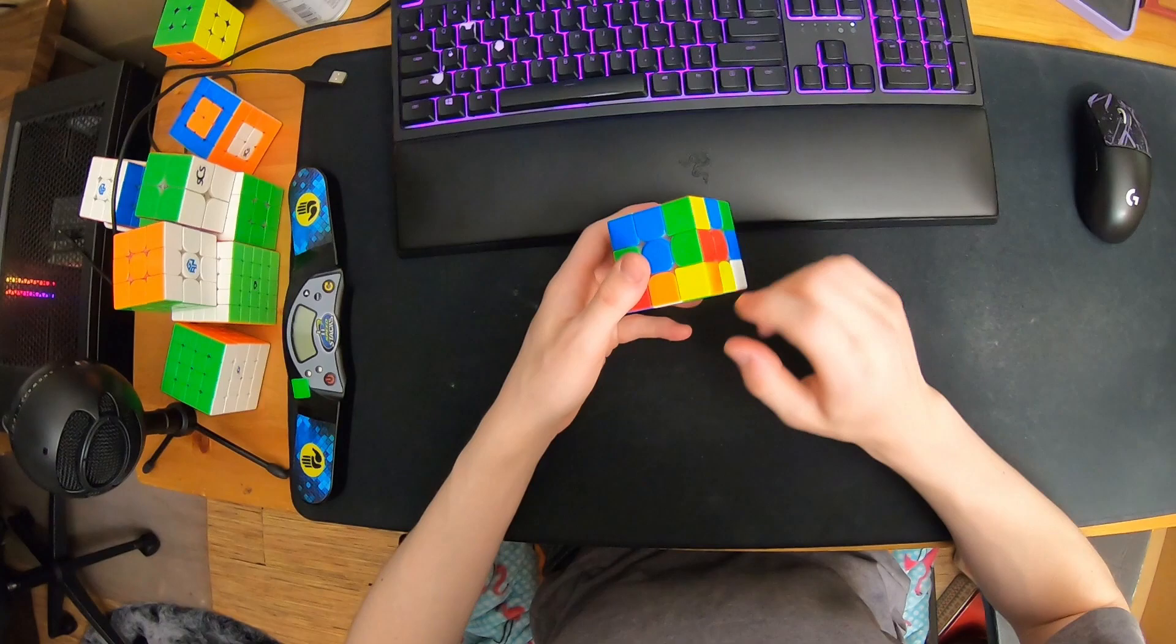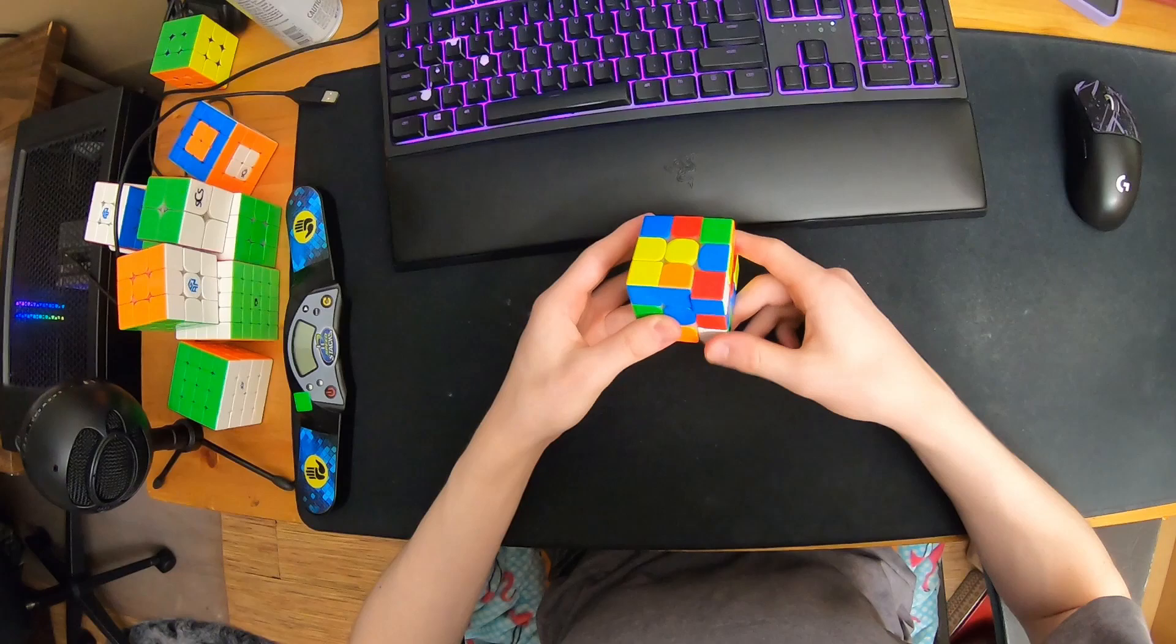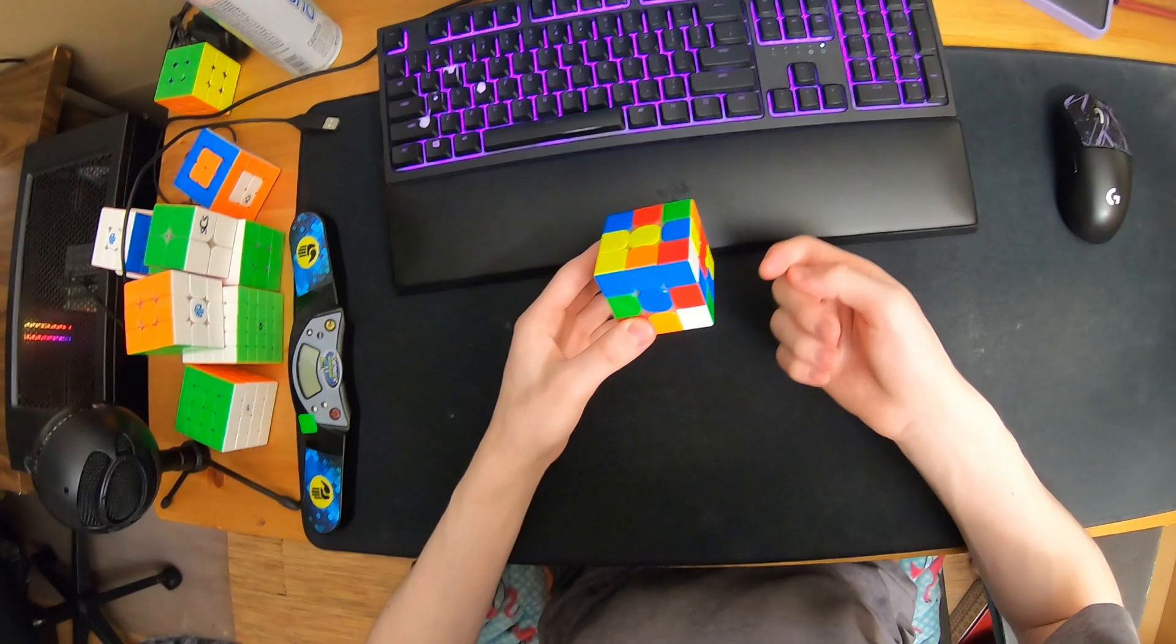This will perfectly set up this to be R2, and then D prime will align my cross. But before the D prime I saw this pair—I inspected it.